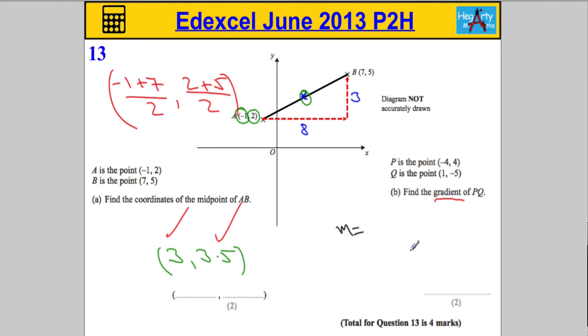And the gradient M is normally found by working out the difference in the y-values, say y2 minus y1, and dividing by the difference of the x-values, say x2 minus x1.